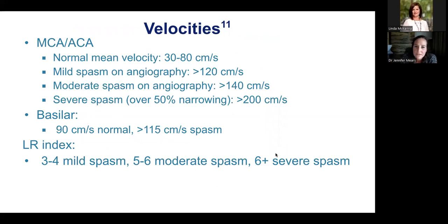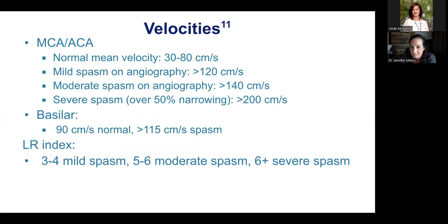Regarding normal velocities: for the ACA and MCA, moderate vasospasm is over 140 cm/s and severe is over 200 cm/s, corresponding to over 50% narrowing. Probably the most important thing is the trend — if a patient's TCDs are in the 110s but their baseline was in the 70s with any clinical change, that's more concerning and should elicit further imaging like CT perfusion, even if they don't technically meet vasospasm categories. The basilar tends to have a higher baseline pressure of about 90 cm/s with anything over 115 considered spasm. Lindegaard ratios: 3-4 is mild spasm, 5-6 moderate, and over 6 is severe — comparing the MCA to the proximal ICA.